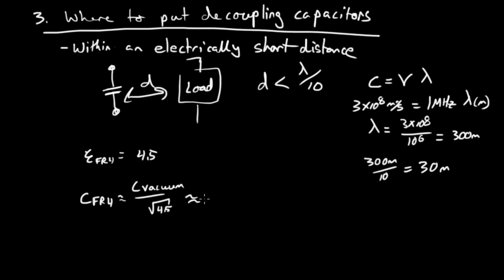And so we can say that the speed of light in FR4 is about equal to the speed of light in vacuum divided by the square root of 4.5 approximately, which is about, let's just call it ballpark, 0.5 times the speed of light in a vacuum.